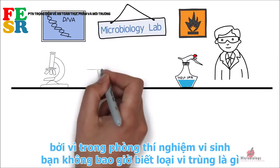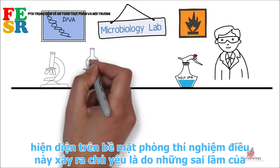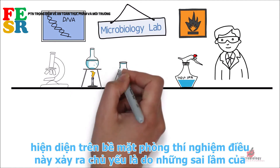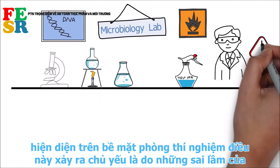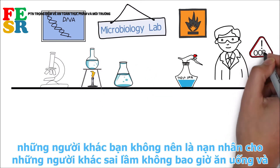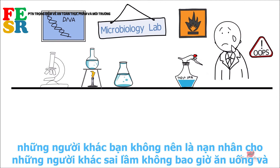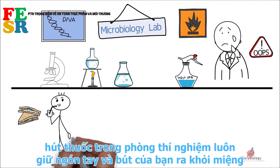Disinfect your hands with 70% IPA quite often, because in the microbiology lab you never know what kind of germs are present on lab surfaces. This happens mainly because of mistakes done by others — you should not be the victim of others' mistakes.